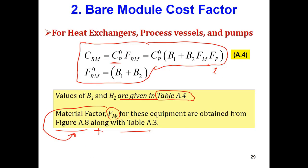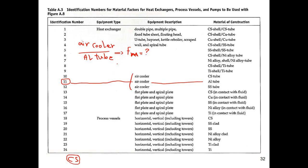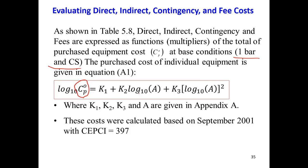CP0 is needed in the bare module calculation. In most cases it will be given to you directly. Otherwise, you can calculate it using a specific equation where CP0 is expressed as a function of K1, K2, K3, and A (which is related to the capacity of the equipment). These parameters are all given in a specific table in the appendix, though this equation is outside the main scope of this unit.